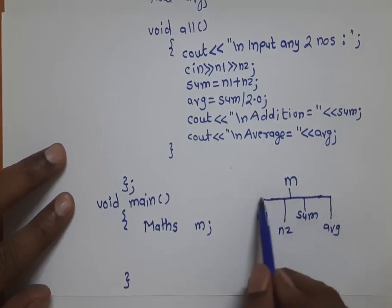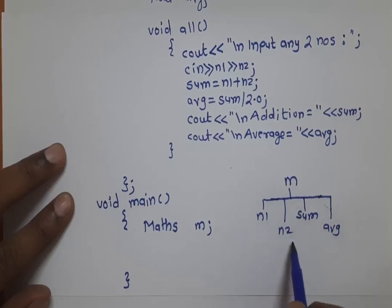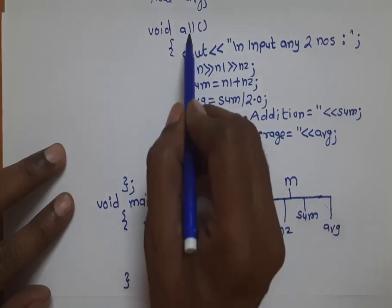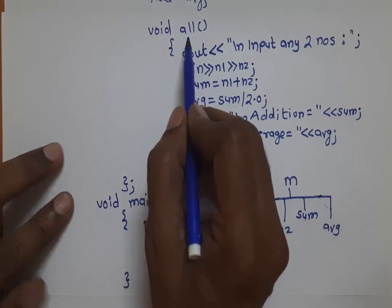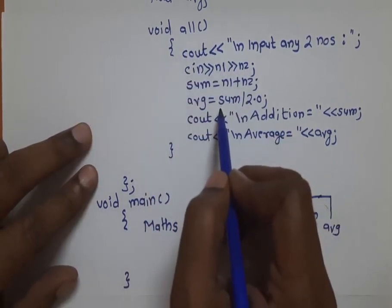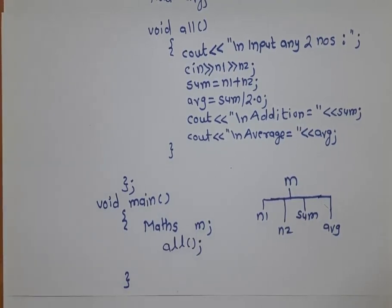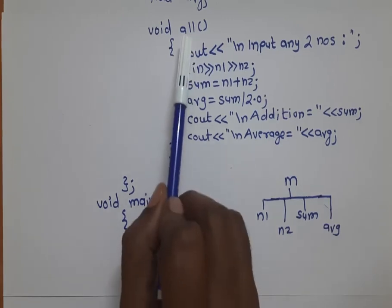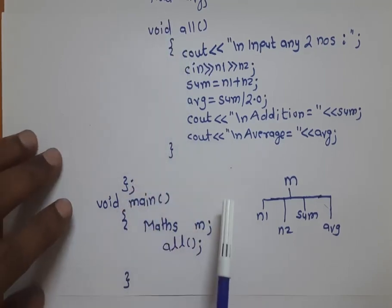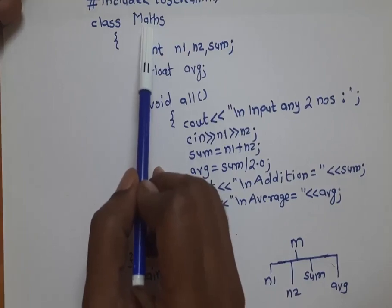I want to read values for n1 and n2, calculate sum and average, and display them. All of this is present within the member function 'all', so if I execute member function 'all' my purpose will be solved. In C programming to execute any function we write the function name, but here the 'all' function is part of class Maths.